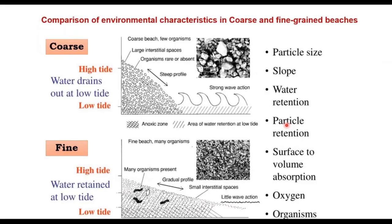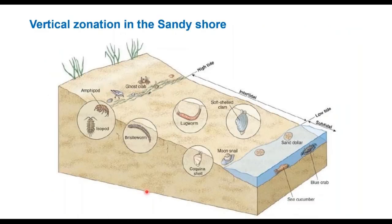If you look at the environmental characters, there are two types of beaches: coarse sand beaches and fine sand beaches. The first image shows that coarse beaches have a steep profile and have large interstitial spaces between the sand particles. There will be small retention of water inside the sediments, and a few organisms may be present, relying on this water for oxygen and on sedimented particles for food. If you look at the typical zonation in the sandy shore, this could be the fine beaches.